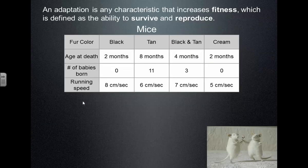When we say 'survival of the fittest,' what does it mean for an organism to be fit? Looking at four mice — black, tan, mixed, and cream — with data on how fast they run, how many babies they have, and how long they live, which is the most fit? The tan one: it lives the longest and has the most babies. It's not the fastest, but it lives the longest and produces the most offspring. That's what it means to be fit — to successfully reproduce.